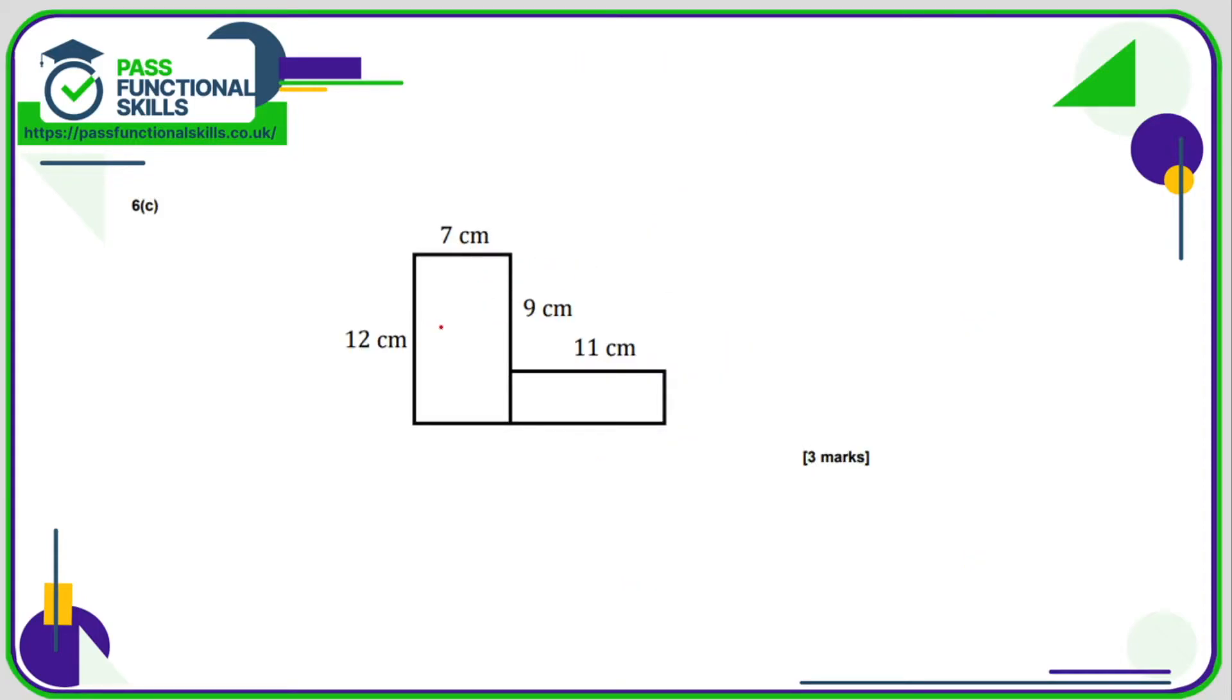In C, we've got 7 times 12. That's 84. And this is not 9 times 11. This is 11 times whatever this distance here as well. And this distance is 12 minus 9, which is 3. Three elevens are 33. Add together the 84 plus the 33 and you get 117 square centimeters.